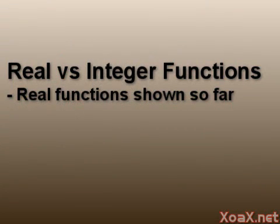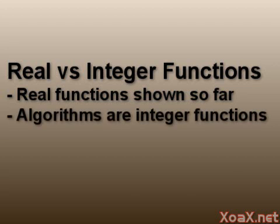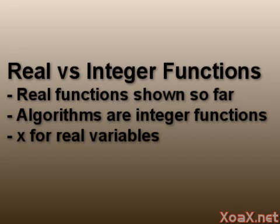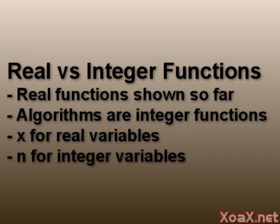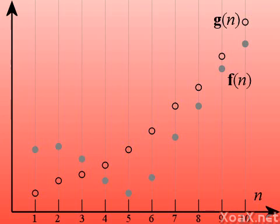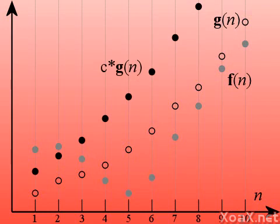So far, we have shown what the situation looks like for general real functions. For algorithms, the input size is generally a positive integer, like the size of an array for a sorting algorithm. In this case, we can think of our f and g as functions on the positive integers. In mathematics, x is used to signify a real variable, while n is used to signify an integer variable. Like Hungarian notation in programming, this notation allows us to see more immediately what is going on, so we will use it. Here we see the graphs of two example functions f(n) and g(n) given by the solid gray and hollow black dots respectively. Notice that the graphs are made up of single dots instead of curves, because the functions are defined on integer values. Just as we had for the real functions, we can have constants such that when we multiply g(n) by them, we bound f(n) from some point onward, and the definitions are analogous.